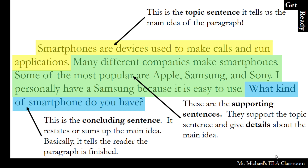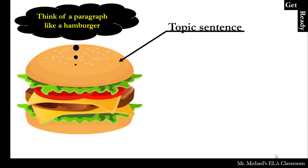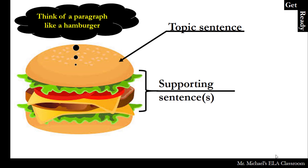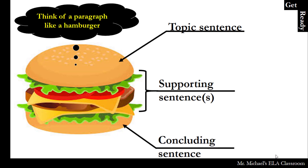We can think of a paragraph like a hamburger, where the top bun is the topic sentence, the fillings are the supporting sentences, and the bottom bun is the concluding sentence. What we need to understand is that it's not a hamburger without any of these parts. Just like if you don't have a topic sentence, it is not a paragraph. If you don't have any supporting sentences, it is not a paragraph. And if you don't have a concluding sentence, it is not a paragraph.